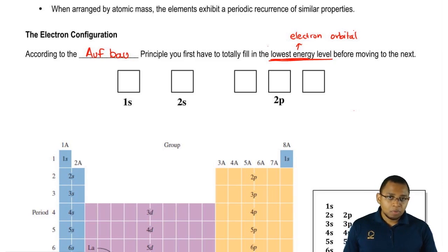The Aufbau principle says that if I'm going to go to 2s, I first have to fill up my 1s completely. We would fill this in with electrons and remember, s can hold how many electrons? It can hold two electrons.